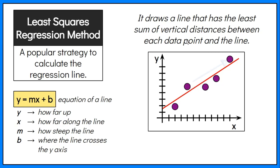For accuracy, it uses the equation of a line y equals mx plus b, where y determines how far up, and x is how far along the line. The m represents the slope, or how steep the line is, and b is the y-intercept, which is where the line crosses the y-axis.